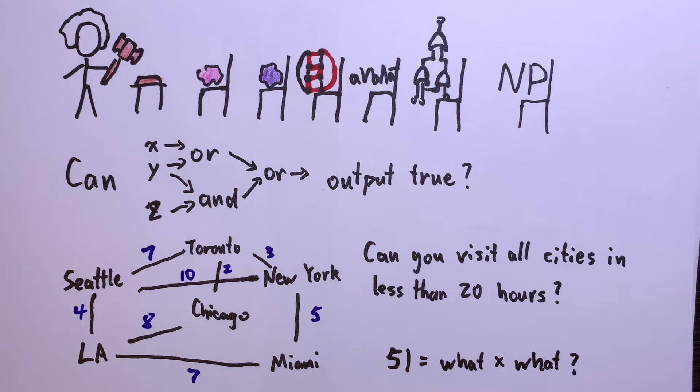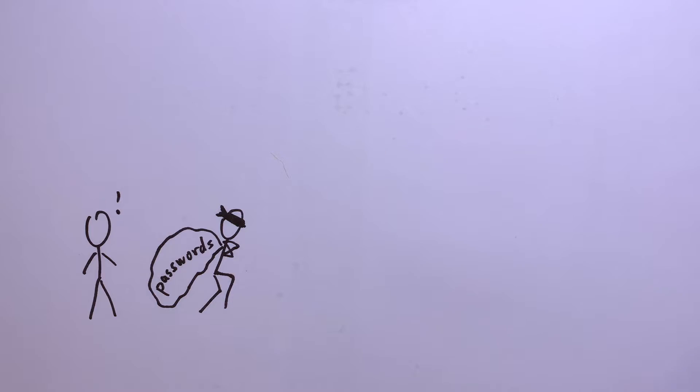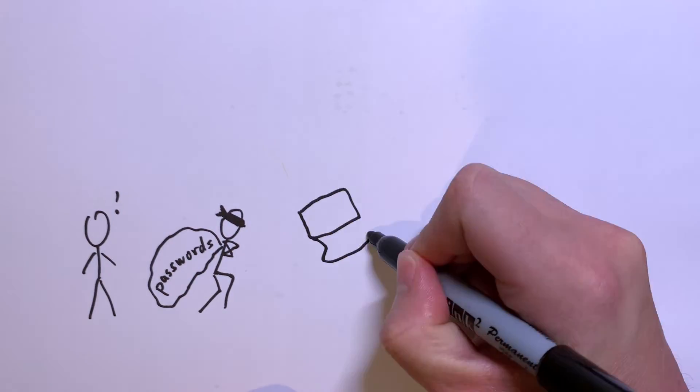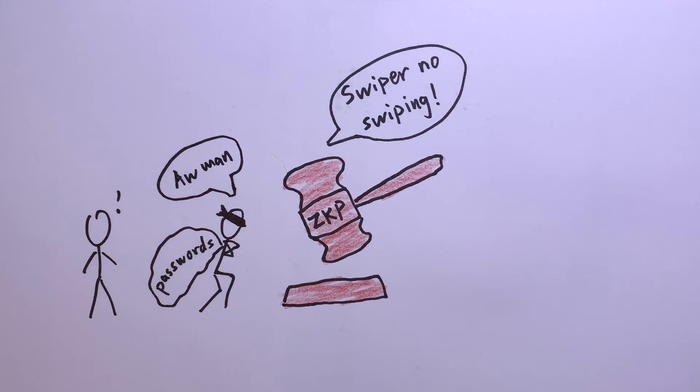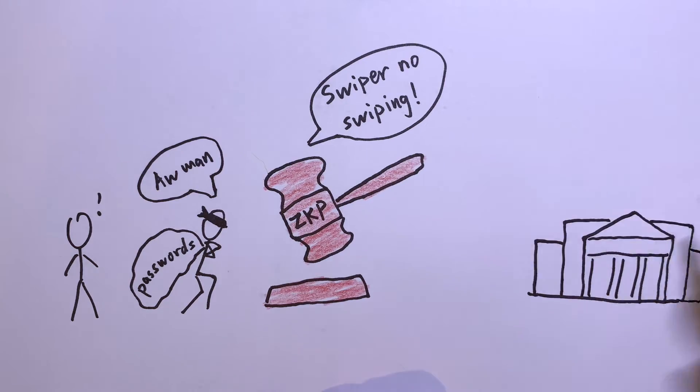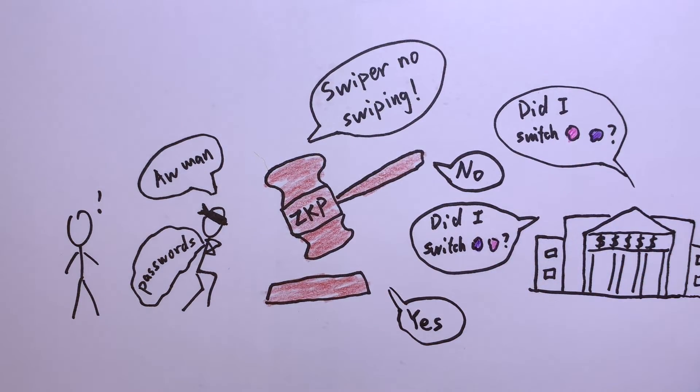So, why care about zero-knowledge proofs? There are tons of applications where you would want to prove something without revealing secret knowledge. One million passwords are stolen every week. With zero-knowledge proofs, you can prove to the bank you know the password without ever sending it over the internet. All the bank would have to do is ask you some questions about the password, but those questions don't actually reveal any information about the password. Just that you know it.